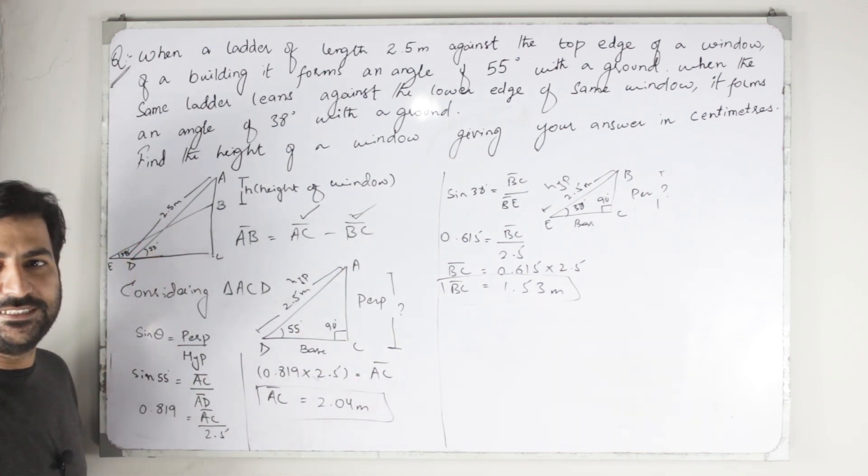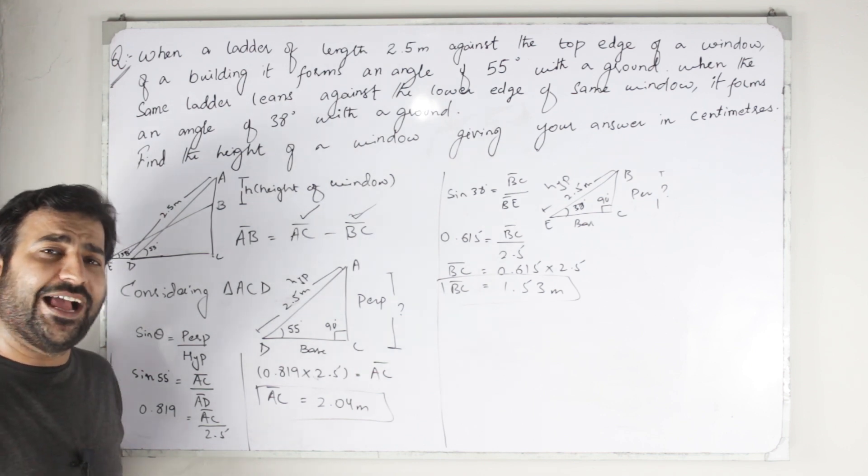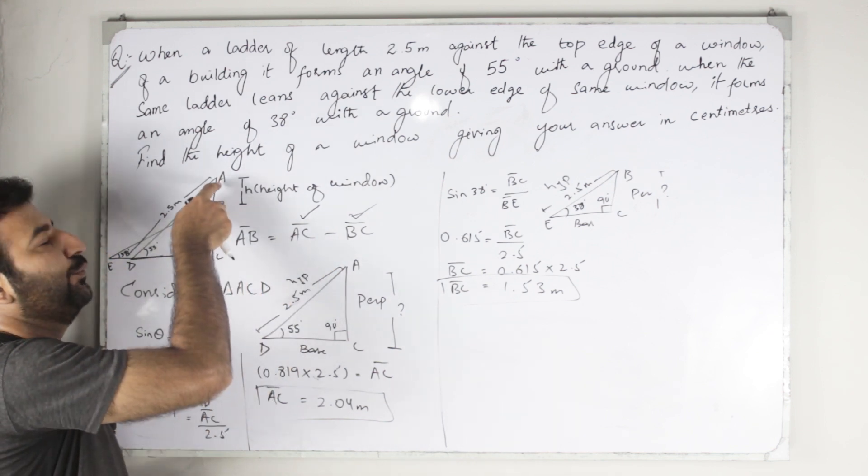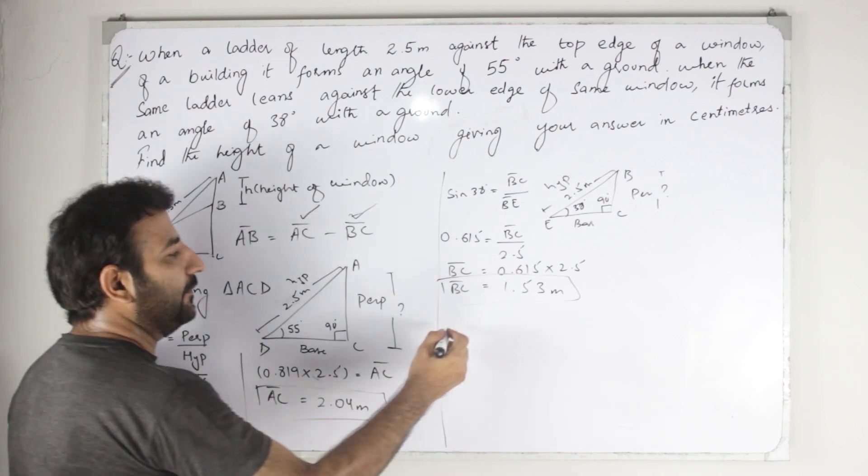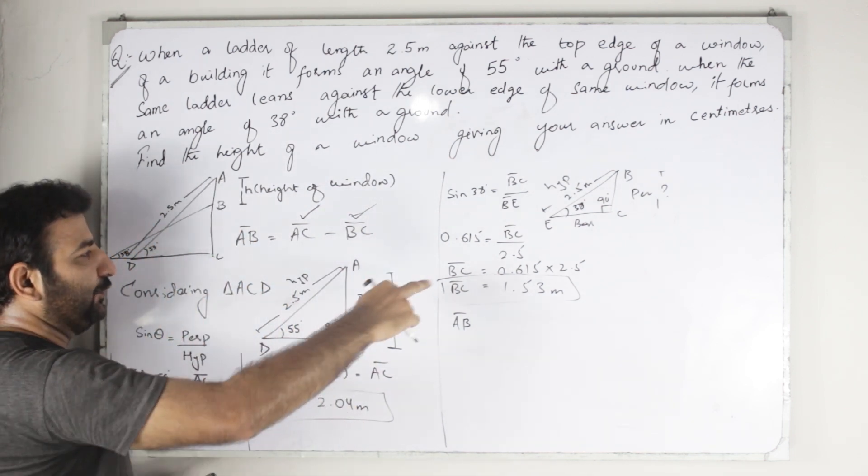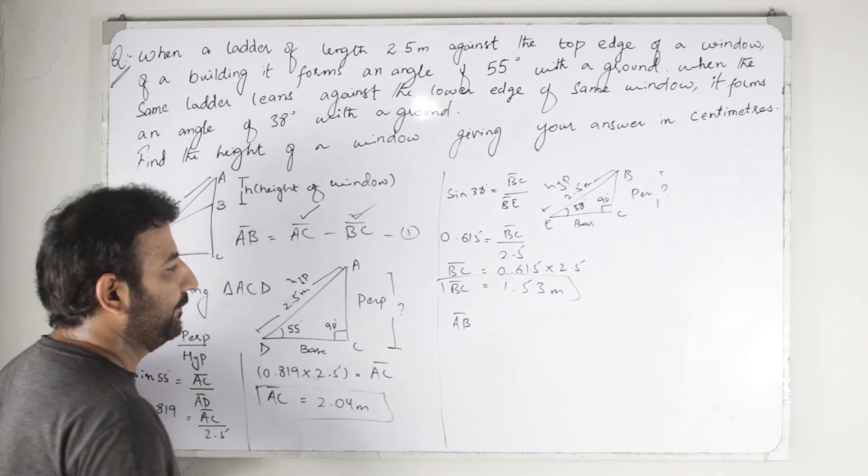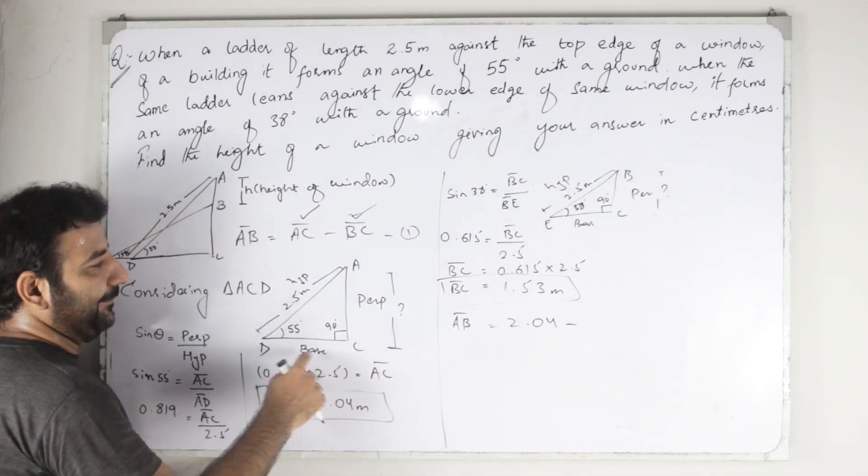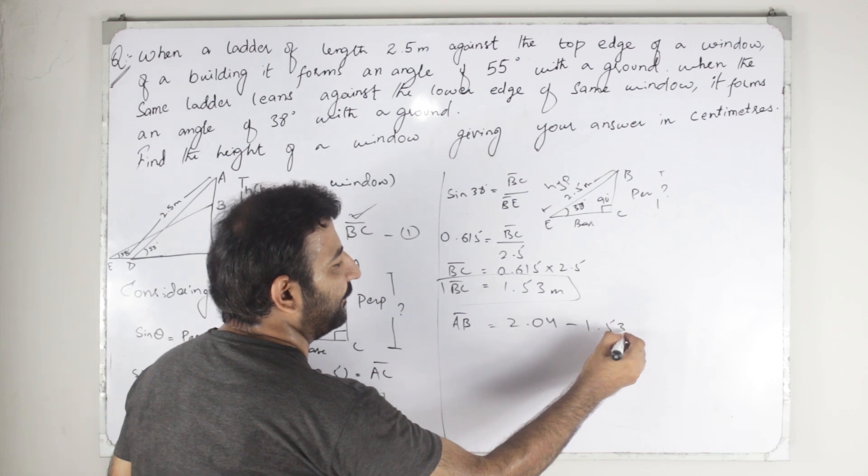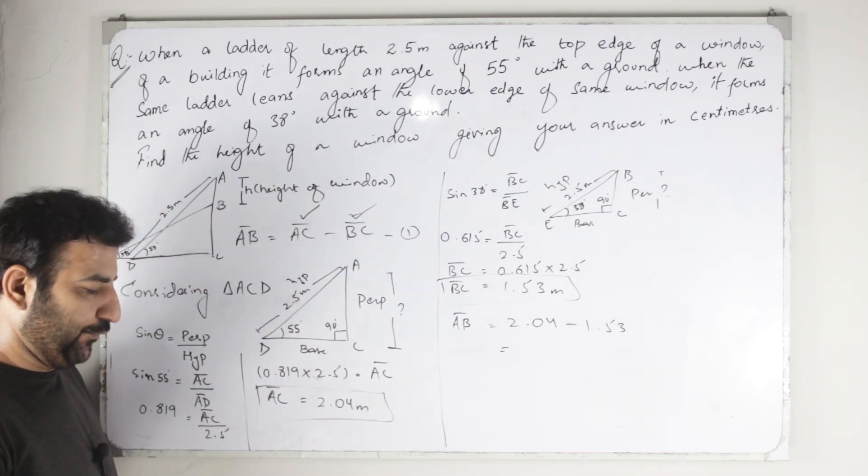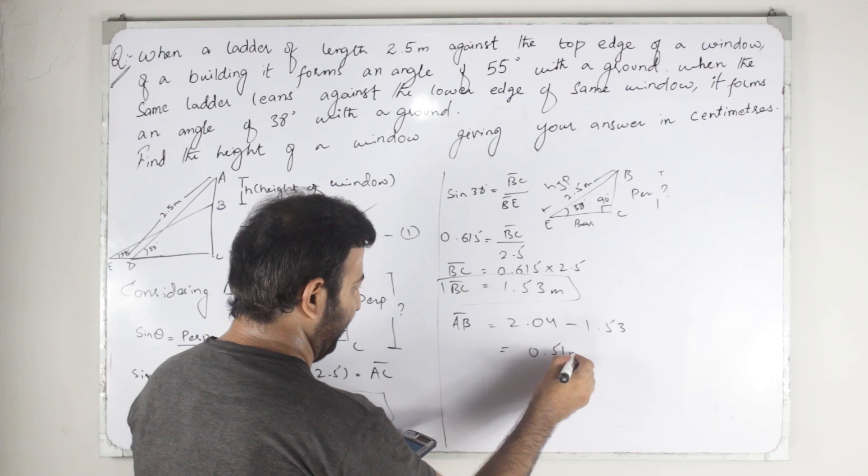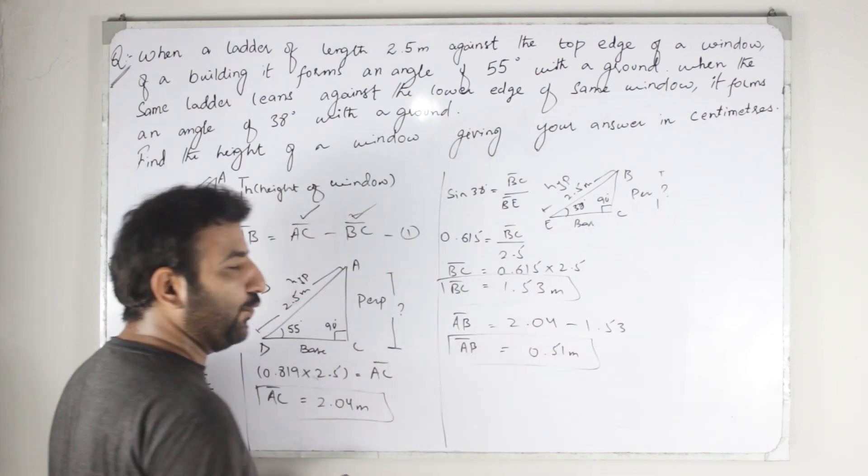So we find BC and AC. Now what we have to do is subtract these two values in order to get the answer, which is AB, the height of the window. AC equals 2.04, BC equals 1.53. 2.04 subtract 1.53 equals 0.51 meters, which is the window height.